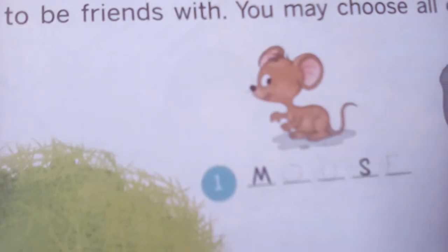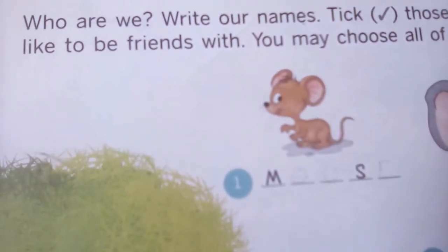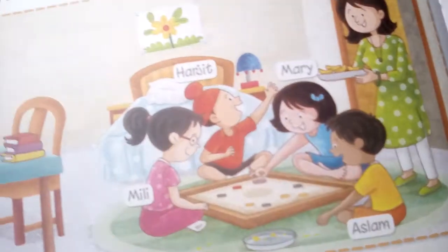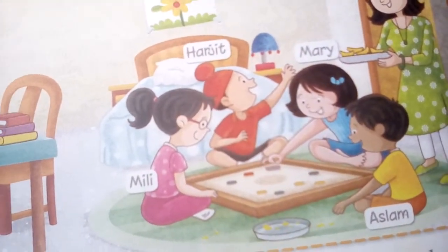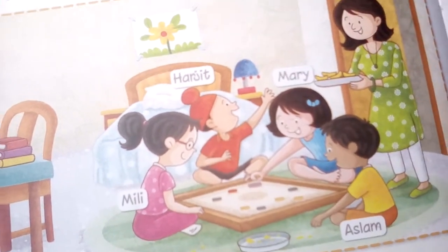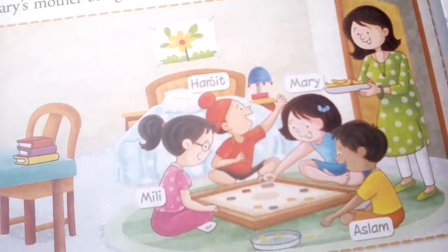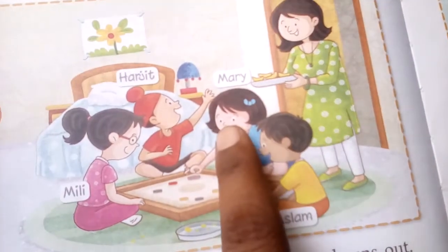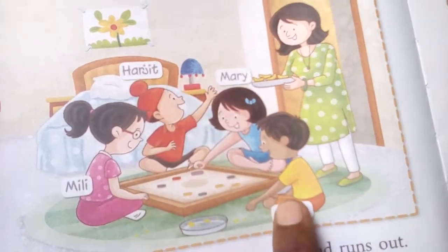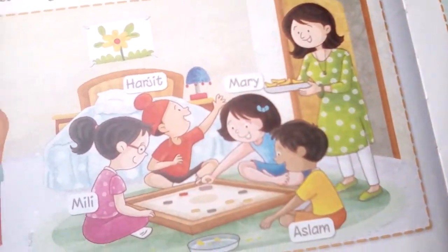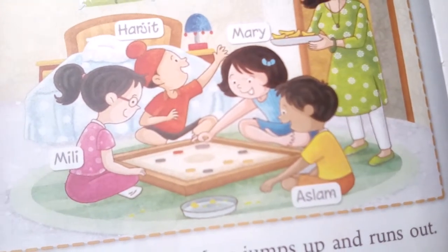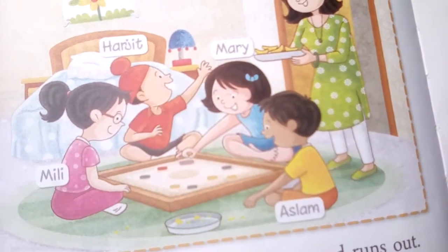So students, can you see this picture? This is a mouse. This story is about the little girl Mary. The main characters of this story are Harjit, Millie, Mary, and Aslam. So this is Millie, this is Harjit, this is Mary, this is Aslam, and this is Mary's mother. What are the children playing? Which game is this? This game is Karam.